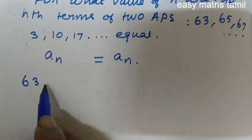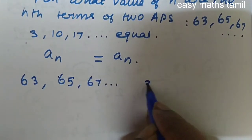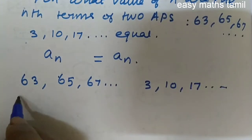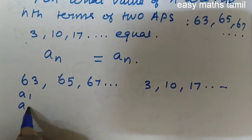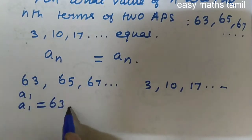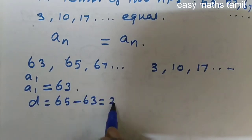First sequence is 63, 65, 67 and the second sequence is 3, 10, 17 and so on. The a value and the first term of this sequence is 63 and the common difference is 65 minus 63 is 2.